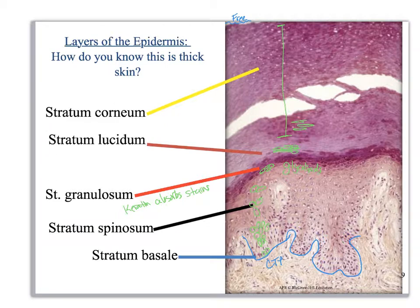Then we get up to the stratum corneum — cells are flat, plasma membranes are starting to break down and crack a little, and it absorbs the stain more, going to a darker color. That's the end of this video lecture. The next video lecture will focus on the dermis and its structures.